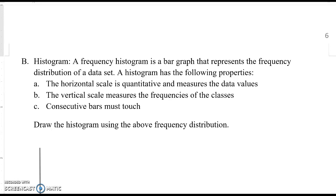A histogram has the following properties: A. The horizontal scale is quantitative and measures the data values. B. The vertical scale measures the frequencies of the classes. C. Consecutive bars must touch.